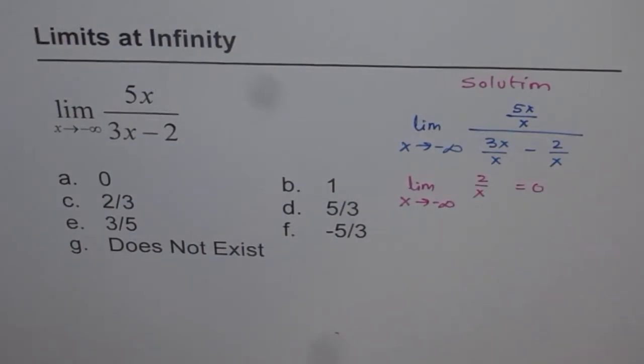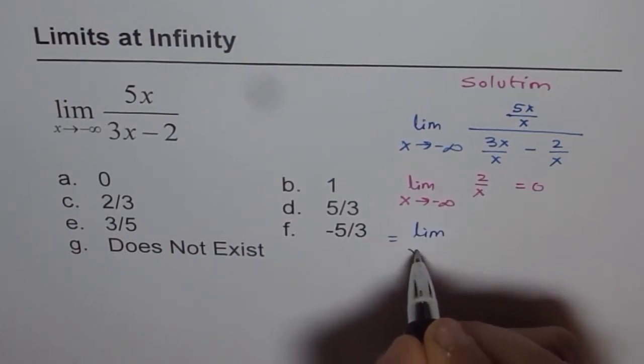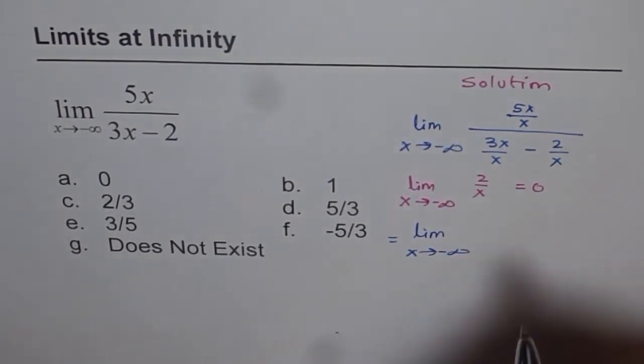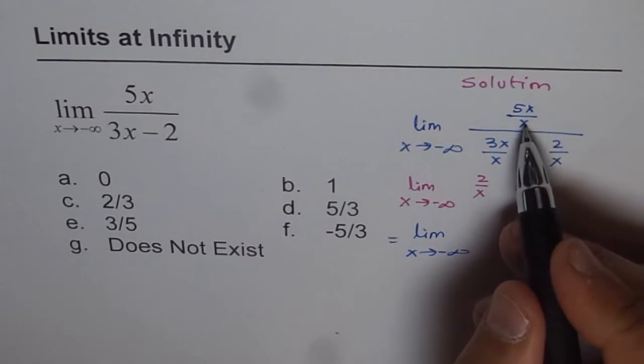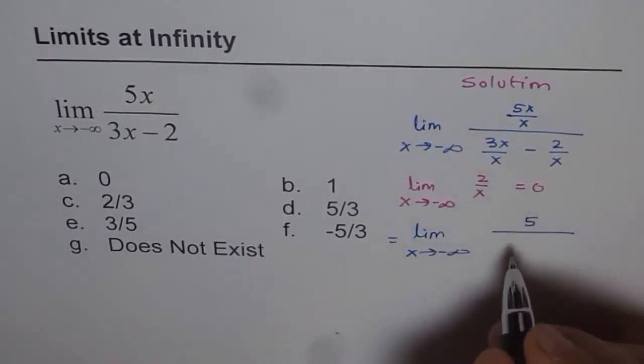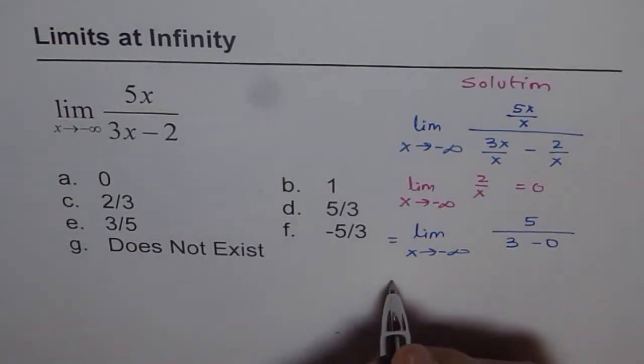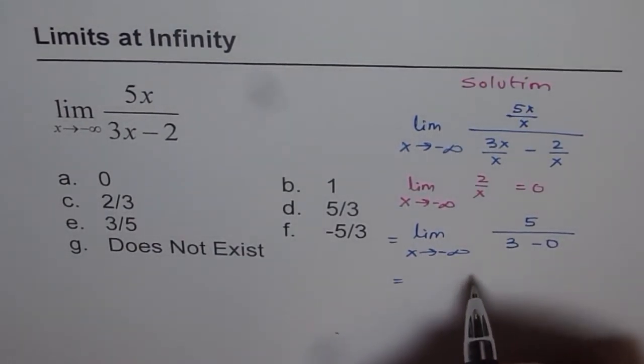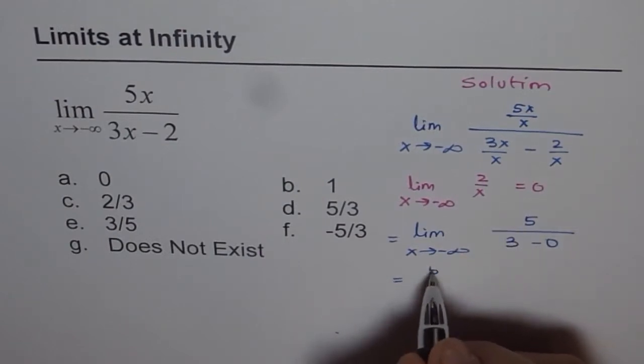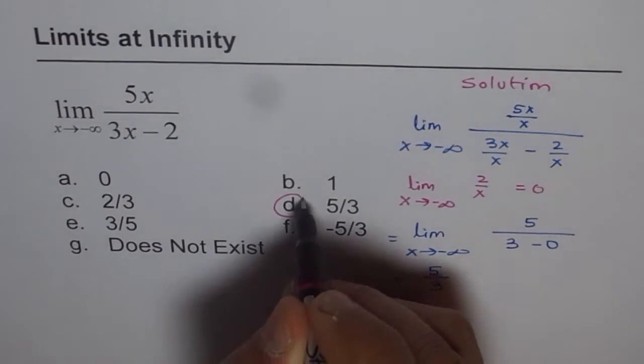We can solve this question further and write the next step as limit x approaches negative infinity. We have 5x over x, which cancels. So we have 5 over 3 minus 0, which gives us the value of 5 over 3. The answer is D.